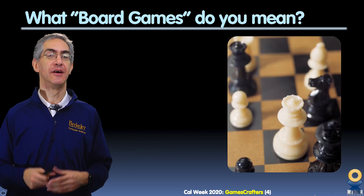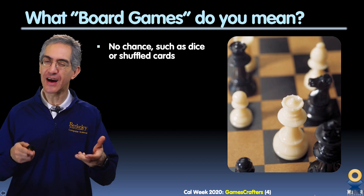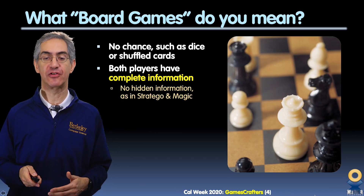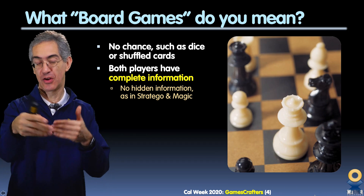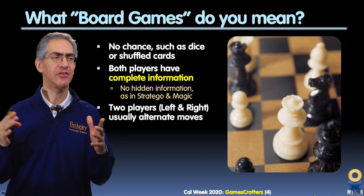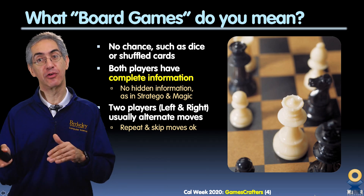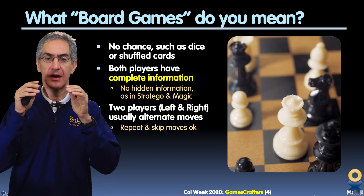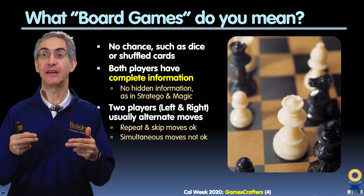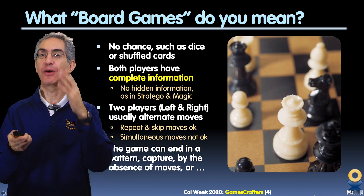A computational board game is what you'll learn about in this group. What do we mean by board games? First, there can't be any chance — the game has to be deterministic, so no shuffled cards, no dice, nothing random. Both players have to know everything about the game state — that's called complete information, so no hidden information like in Stratego or Magic. There can only be two players. Usually you alternate moves, though you can have a skip or repeat move like in Othello where one player passes. But you can never have a simultaneous move. And as I said, the game can end in any way — four in a row, a capture, anything — we can handle those games.